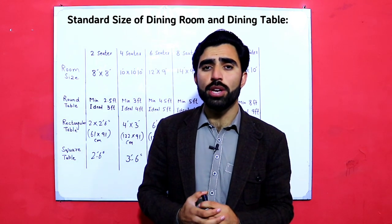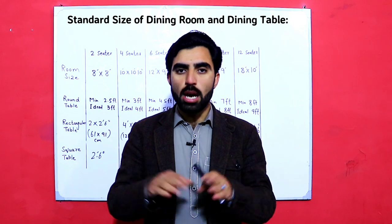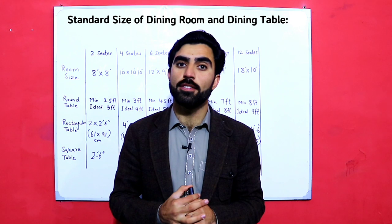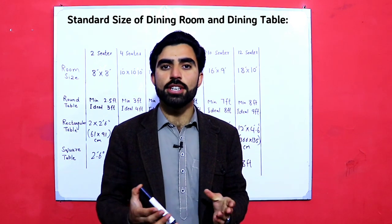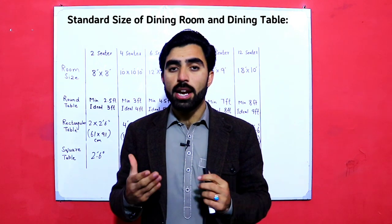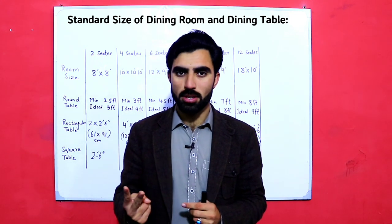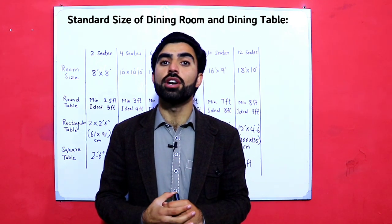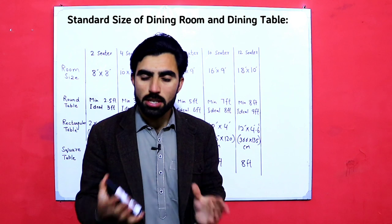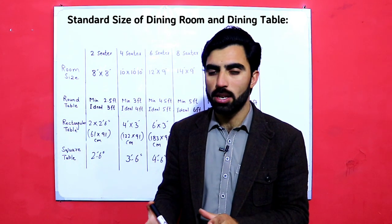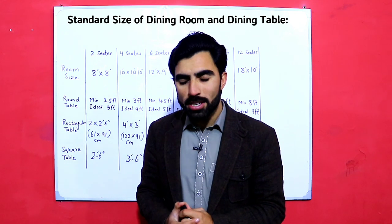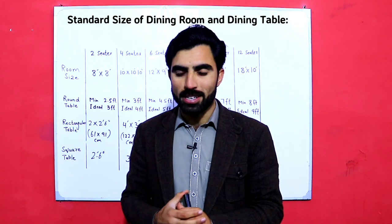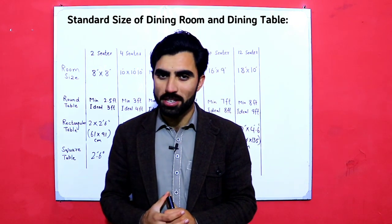We have three types of tables: round table, rectangular table, and square table. We will cover what should be the size of different types of dining tables and the standard size of dining room for two sitters, four sitters, six sitters, eight sitters, ten sitters, and twelve sitters. If you are new on this channel, don't forget to subscribe and press the bell icon, and also like this video if it is helpful for you.